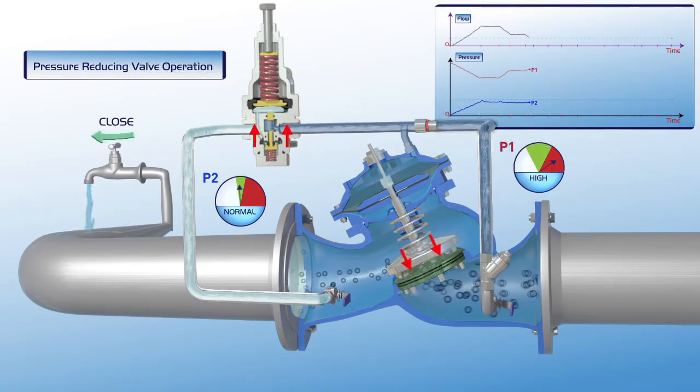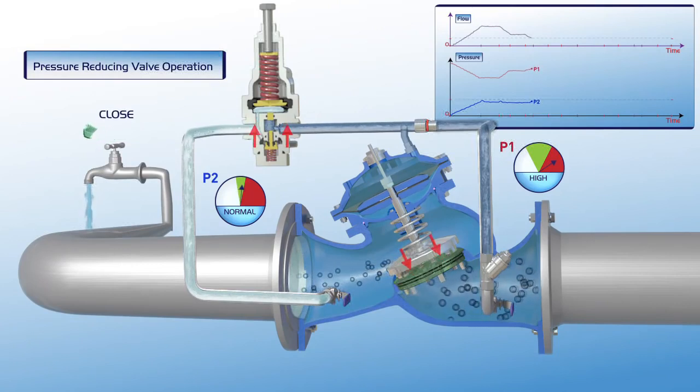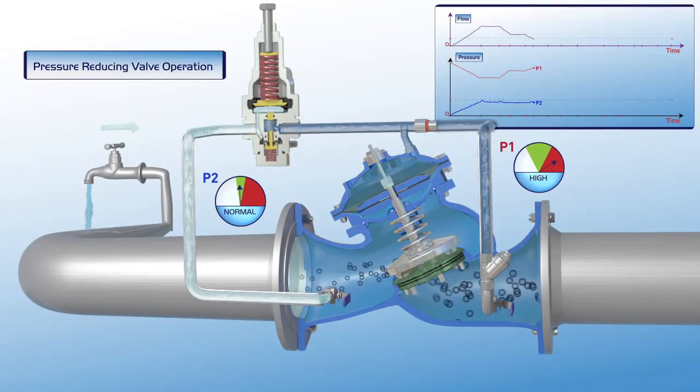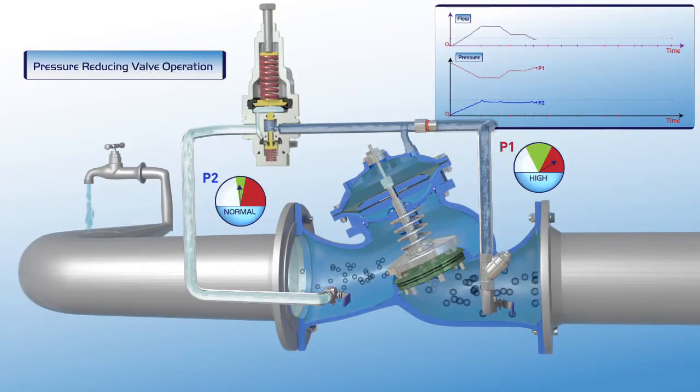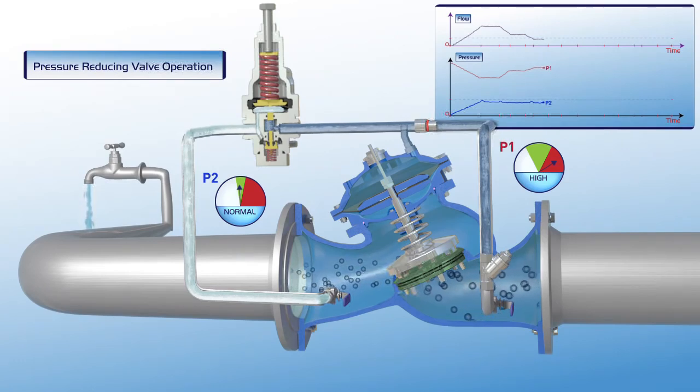Additional reduction in consumer demand results in an additional increase of the P1 upstream pressure and further reduction of the system's flow. Note that the downstream P2 pressure remains stable at its green zone settings during this entire process.